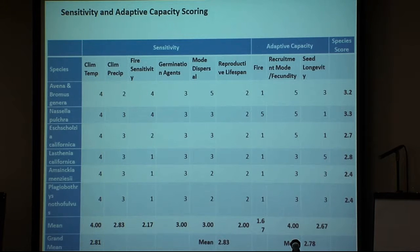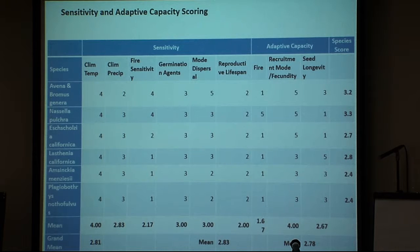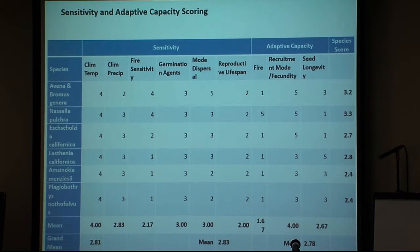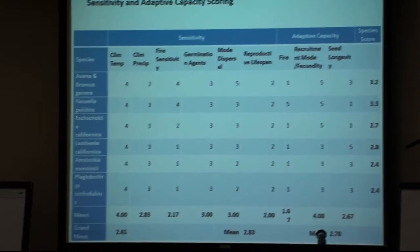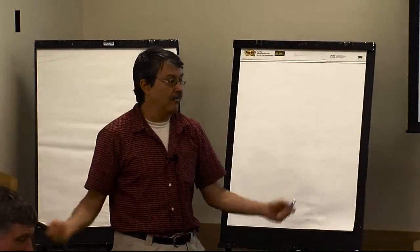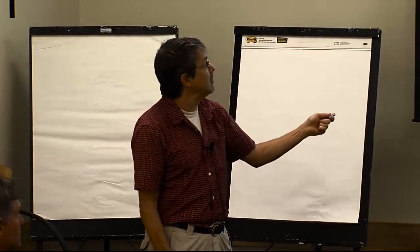Fire sensitivity — oaks have really good resistance to fire generally speaking; older trees have thick bark and don't burn too easily, so their sensitivity is low. They also have a very good adaptive capacity — for example, they can stump sprout. The difference between sensitivity and adaptive capacity is whether you have any tool that lets you deal with things on the landscape. If you do, you get a higher score up to five; if you don't, you get a lower score in that particular column.